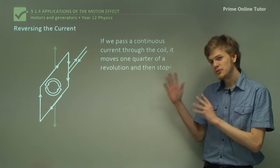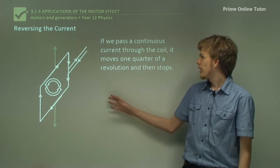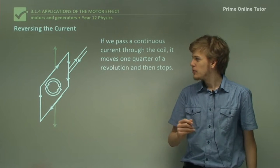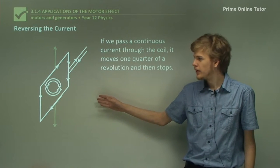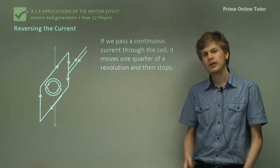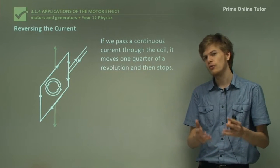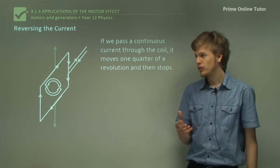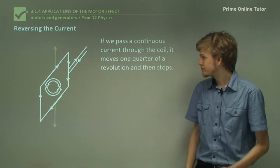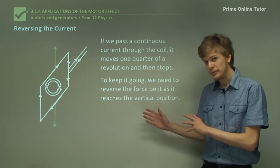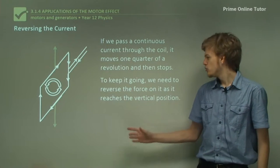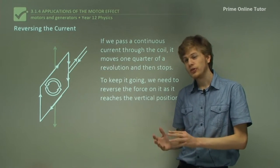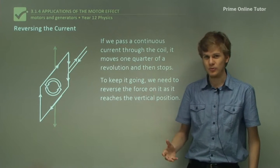Now, if we pass a continuous current through the coil, we'll get the coil going through one quarter of a full rotation and then stopping. Because the forces on it look something like this: the force on the top wire of the coil is pulling it up, and the force on the bottom wire is pulling it straight down. This means that the net torque on the coil is zero, because we're pulling away from the axis of rotation. So to keep it going, what we need to do is figure out a way to reverse the force on it.